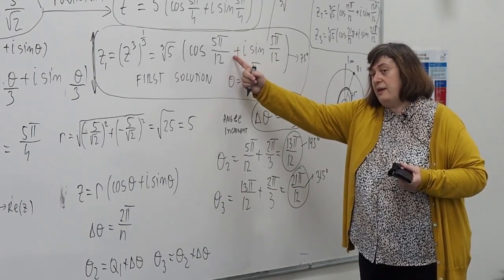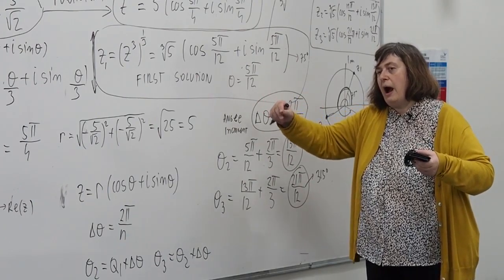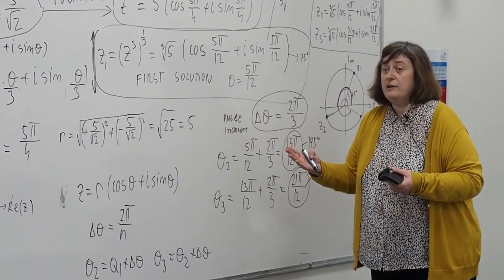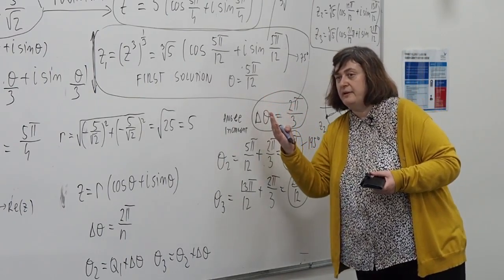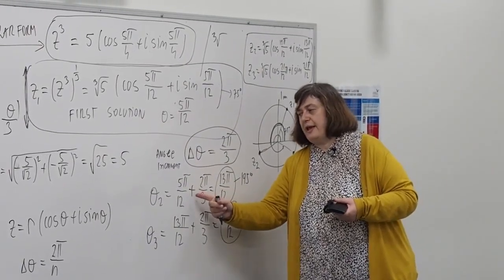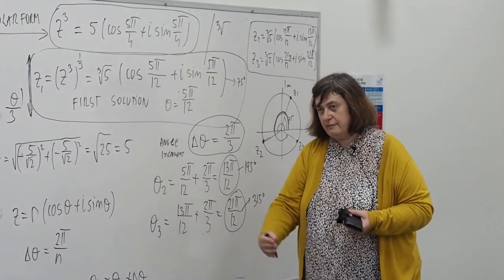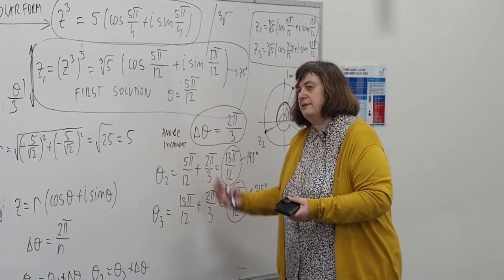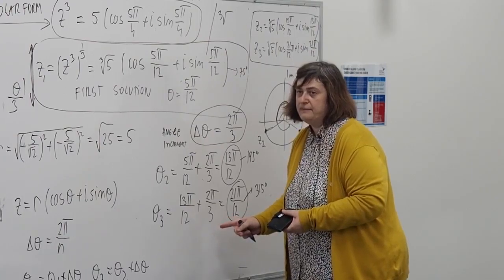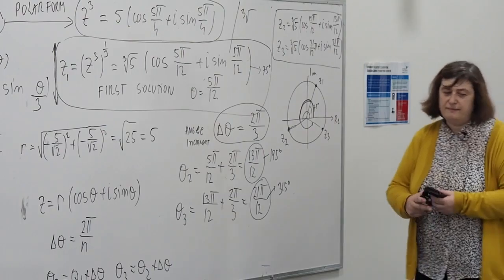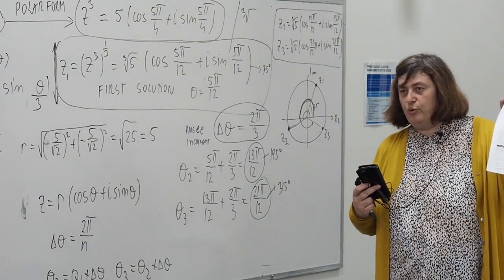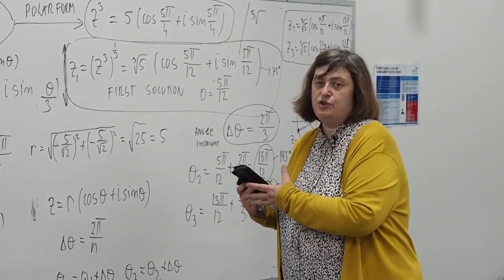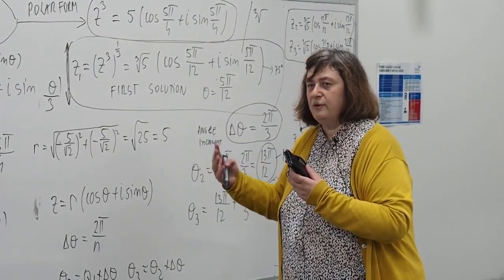Alternatively, you could start with the first solution and add 2kπ before dividing by 3. Dividing by 3 then gives the increment 2kπ/3. Setting k = 0 gives the first angle, k = 1 gives the first angle plus the increment, and k = 2 gives the third. You don't need to memorize this formula — the step-by-step approach works just as well.